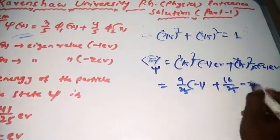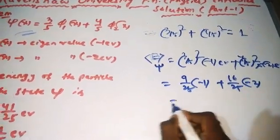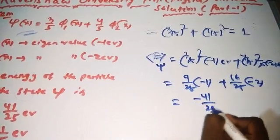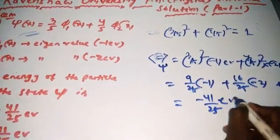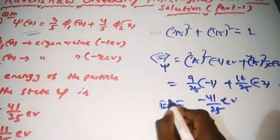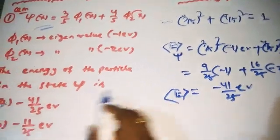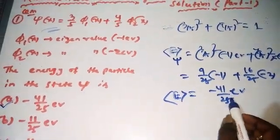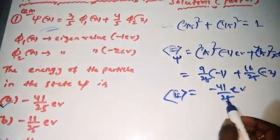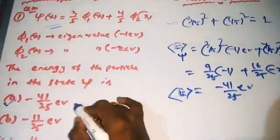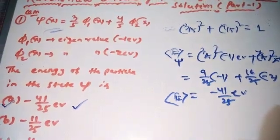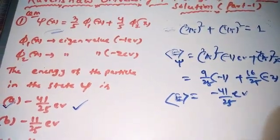That gives us −9/25 − 32/25 = −41/25 electron volts. The energy of the particle in the state ψ is −41/25 electron volts — this is the right answer. Moving to the second question.